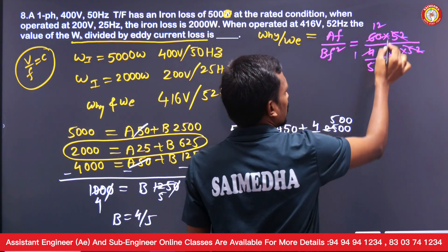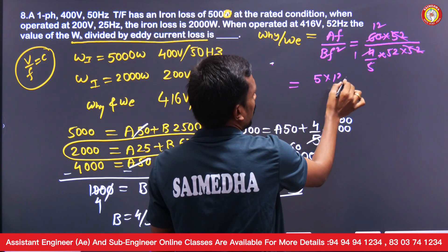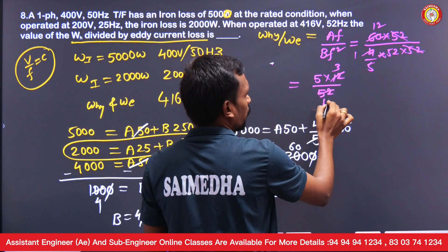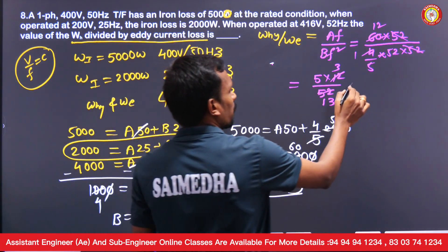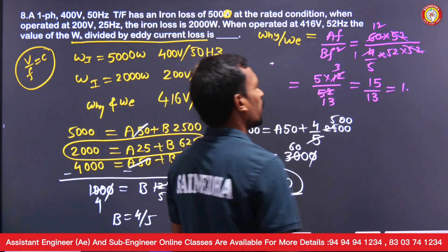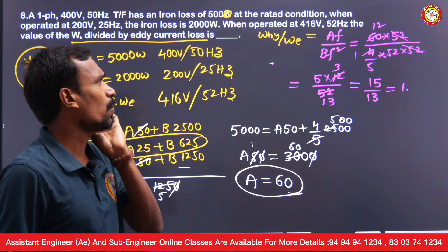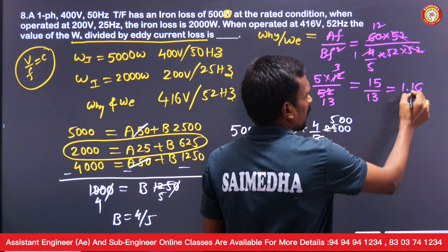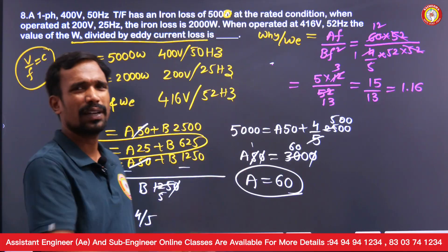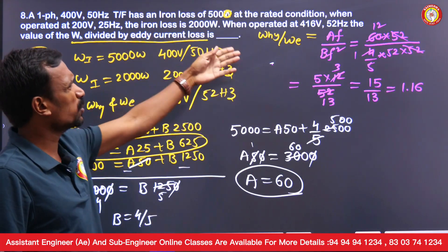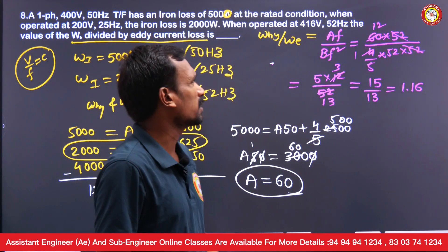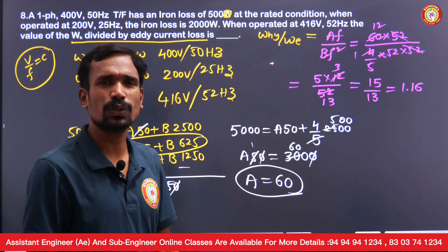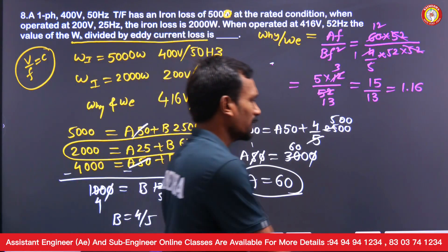After cancellation, the ratio simplifies to (5×12)/52 = 60/52 = 15/13 ≈ 1.15. You don't need to separately calculate hysteresis and eddy current losses — just use a·f divided by b·f² at 52 Hz and simplify directly.